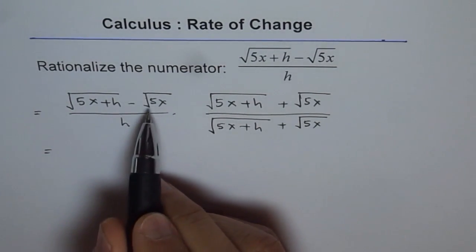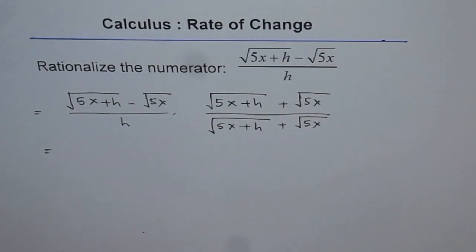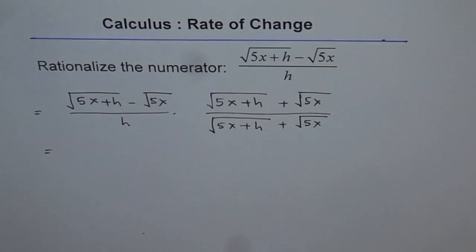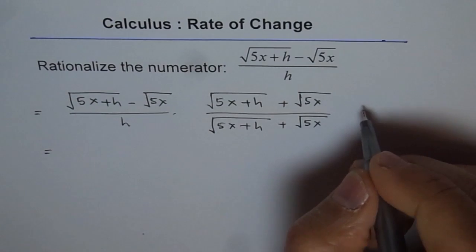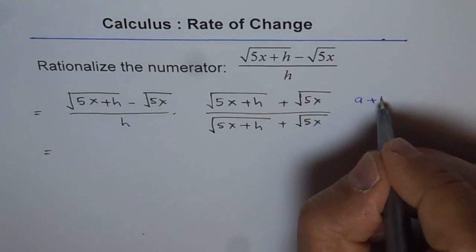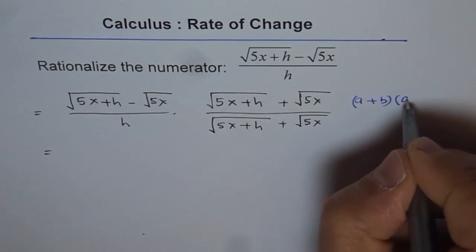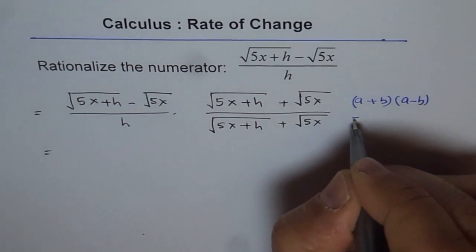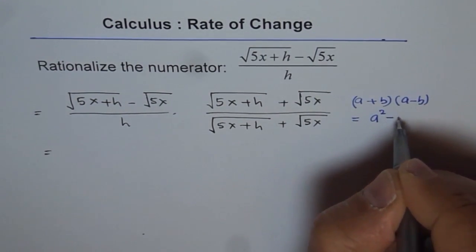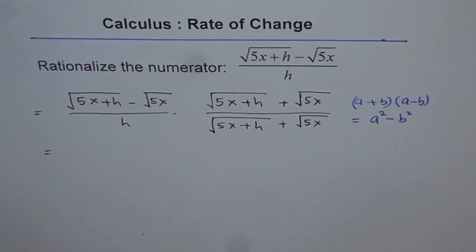You know, a plus b, this is like a minus b times a plus b. So a plus b times a minus b is a square minus b square. So that is the factoring thing which you remember. So we will apply that now.